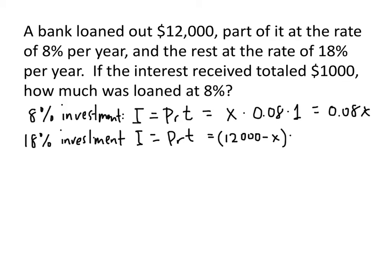Both pieces together need to add up to $12,000, so if one is x, the other has to be 12,000 minus x. The interest rate is .18 or 18%, and the time frame is again one year. When we multiply that out, we get 2160 minus .18x.